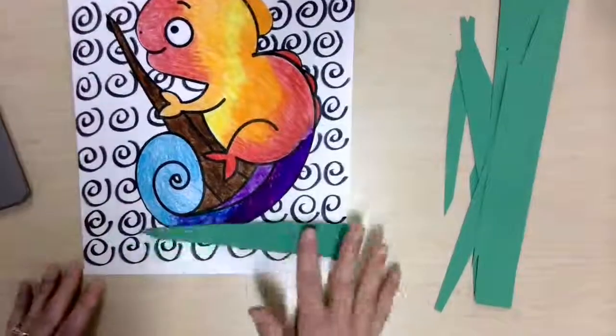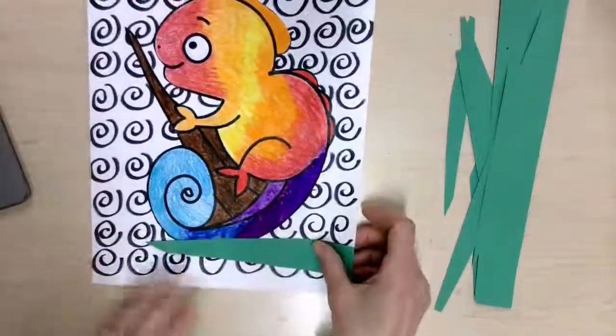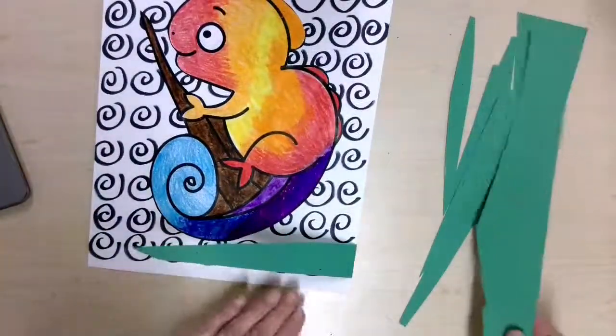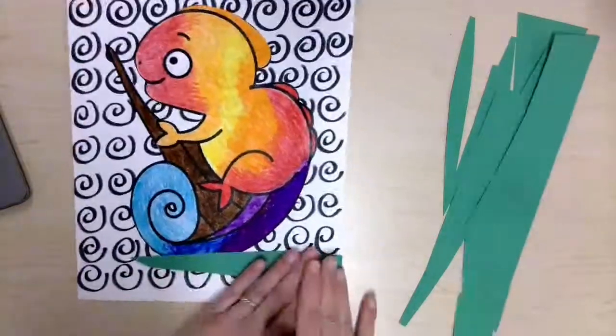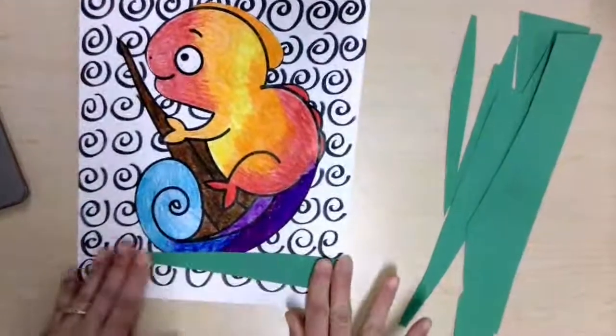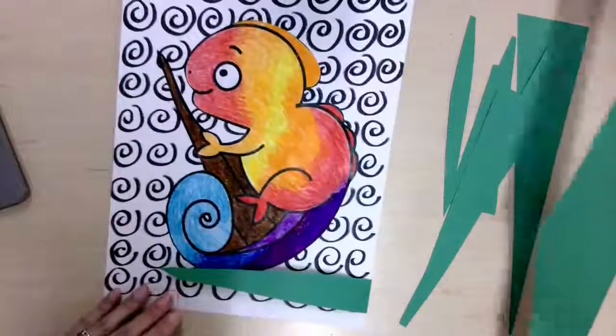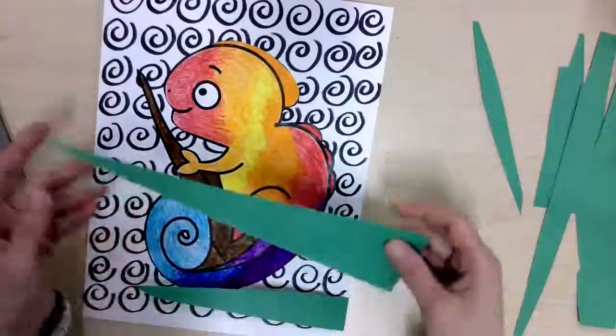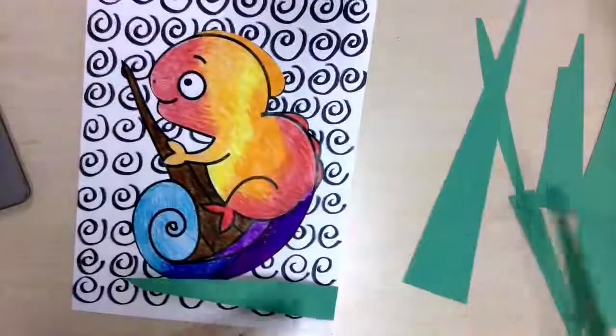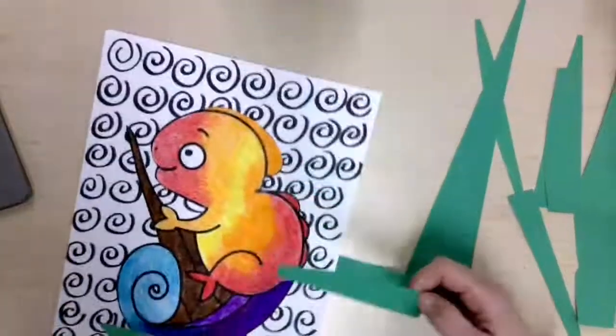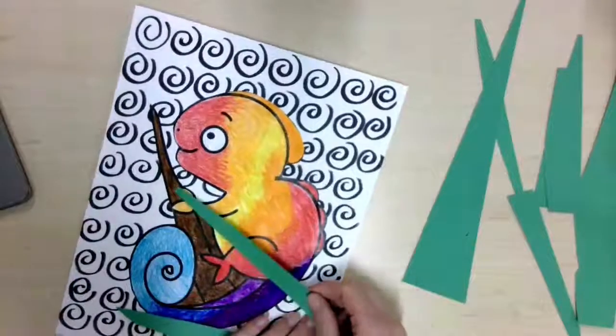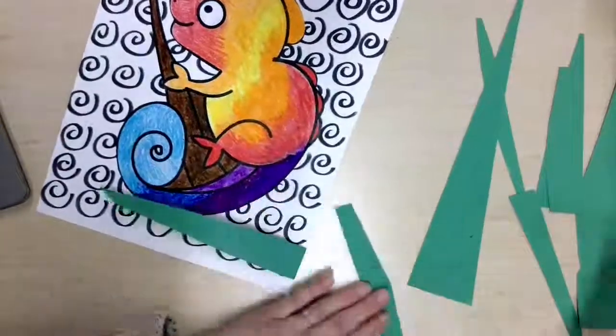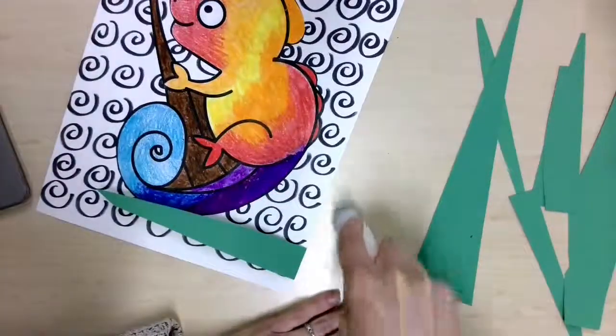You could glue it down in the front if you would like, but I like how it pops out. Then you're just going to space these out. The ones that I have are different lengths, so it looks like he's peeking through the leaves in the jungle. Keep putting glue at the end, and then I might angle this up this way just a little bit for fun.